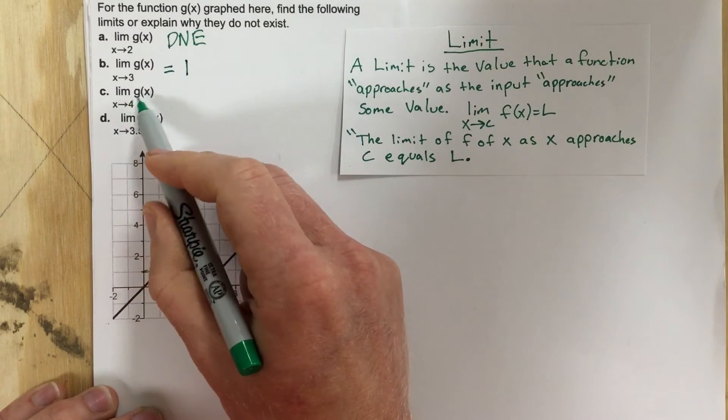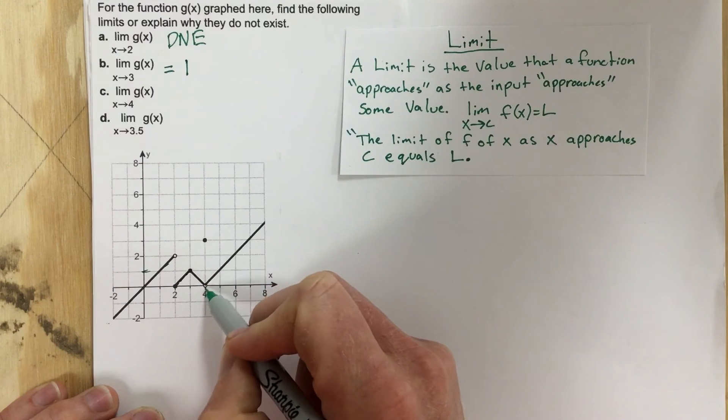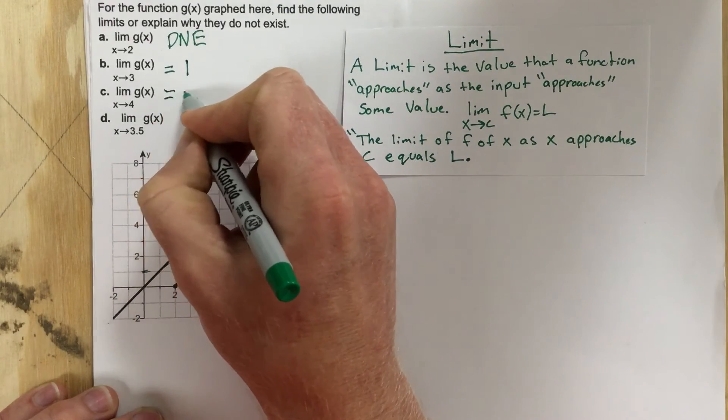The limit of g of x as x approaches 4. Well, as we approach 4 from the left, so x value of 4 from the left and the right, we're approaching a y value of 0. So this equals 0.